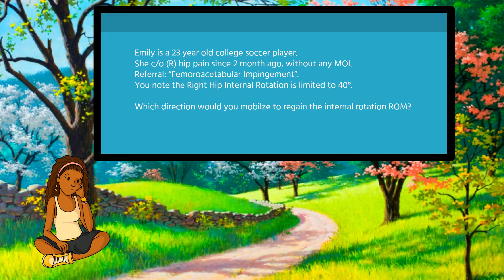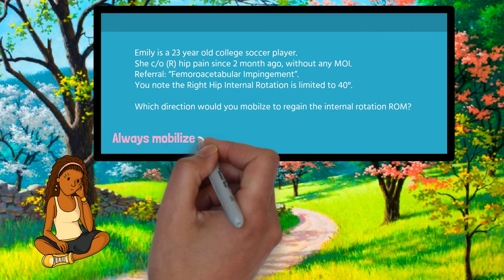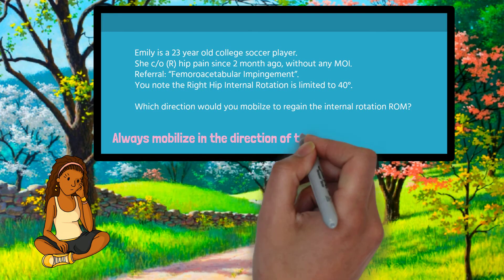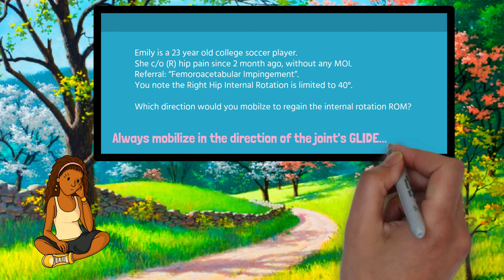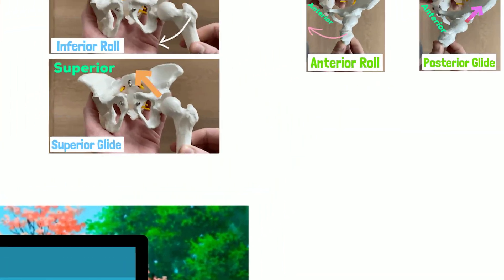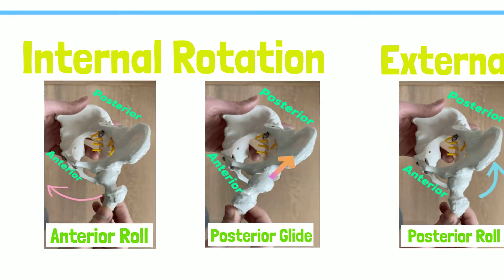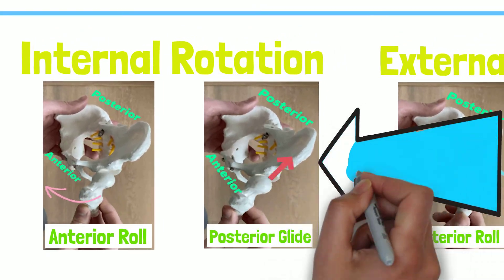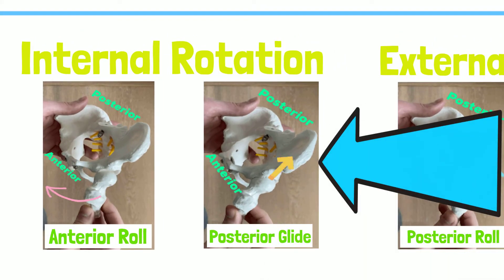Okay, let's answer this. Remember, you always mobilize in the direction of the joint's glide. So, if you were to regain internal rotation movement, you need to mobilize the femur posterior.